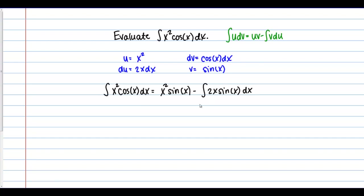So how do we proceed from here? We just proceed as we would in any other situation. Now I have the integral of 2x sine of x, and this also looks like a good candidate for integration by parts. It's pretty common that you would have to do integration by parts several times to complete a problem. So let's look at this integral, 2x sine of x, and try to use integration by parts on that.